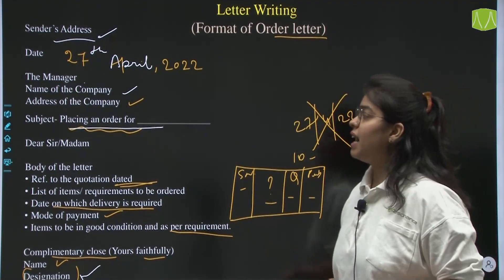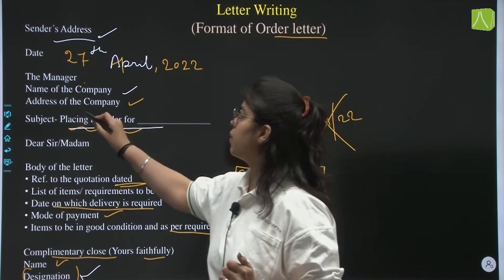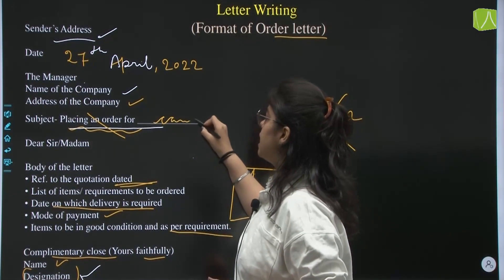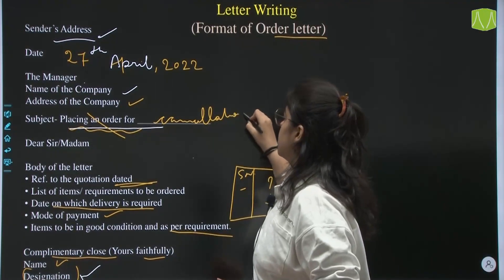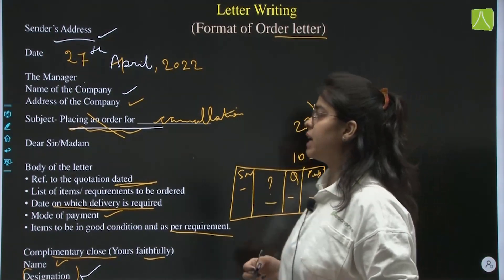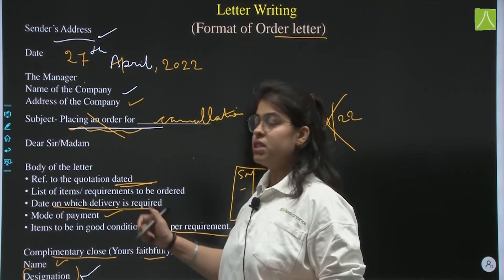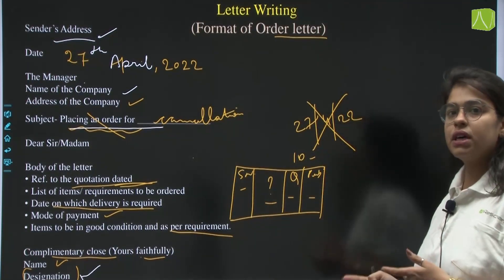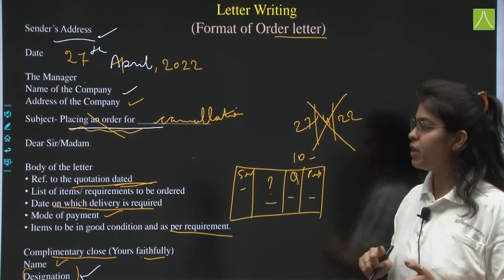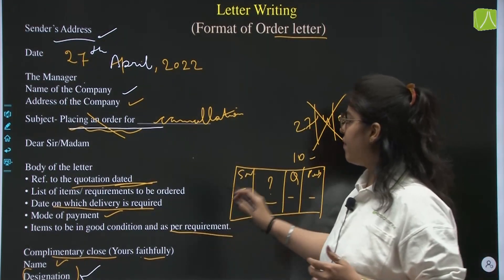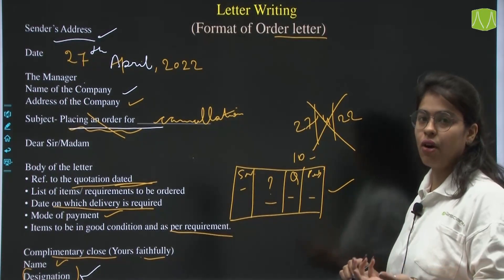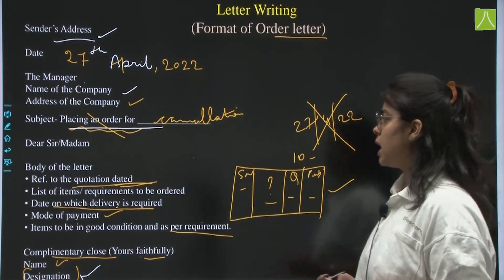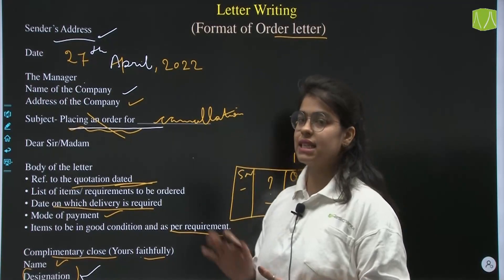This is the format of the order letter. For a cancellation order letter, the format remains the same with just a few changes. The subject changes to 'cancellation of the order.' Instead of referring to a conversation, you reference the order bill number or reference number. You make the same table of items ordered, and then state that you want to cancel due to late delivery or negative reviews about the company.